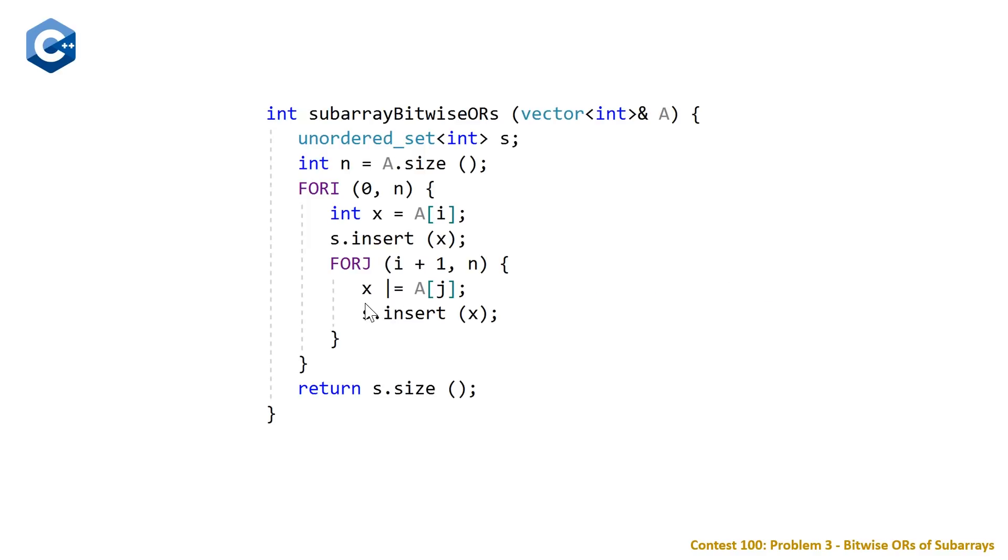This is just your bitwise OR operator. When you have two pipes or two bars, it's a logical OR. And when you only have one, it's a bitwise OR. Once we do this, we have our running bitwise OR at this point, and then we insert the value again. And at the end, we can output our size. Unfortunately, this times out because it is a quadratic time complexity. And I guess for 5 times 10 to the fourth, that is too much.